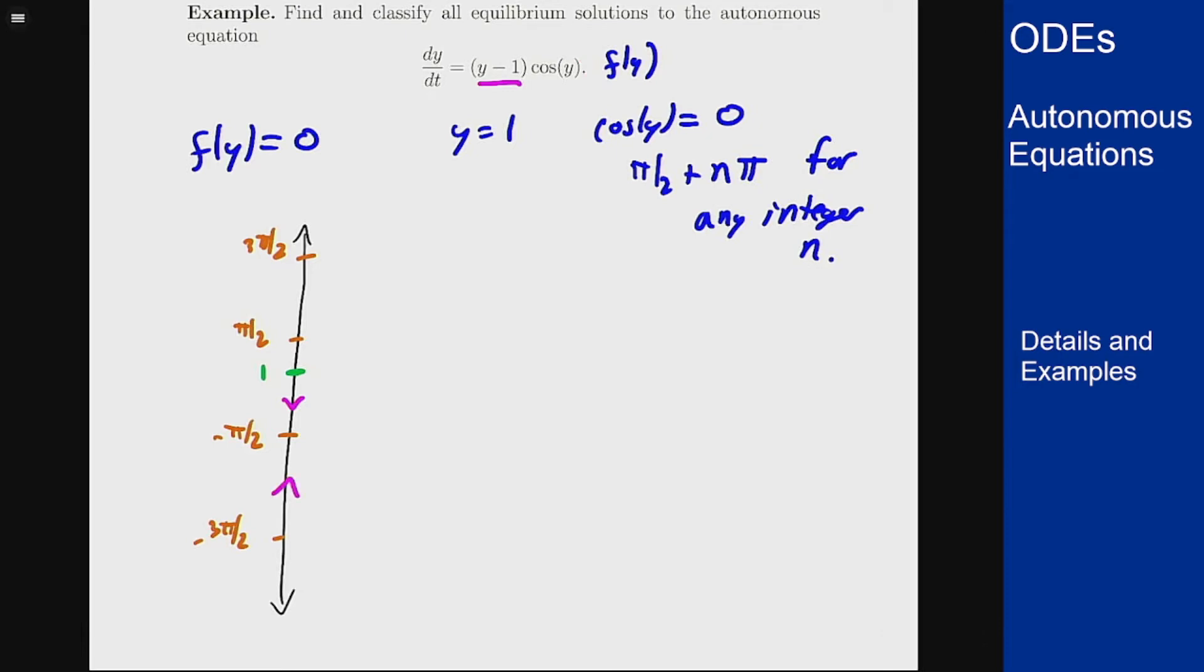And now everything that's below 1 will always have the y minus 1 being negative. Since cosine always switches signs at every zero, it always goes plus then minus then plus then minus, we know this is going to alternate forever heading down in this direction.